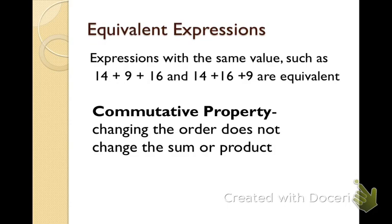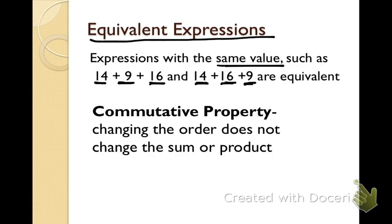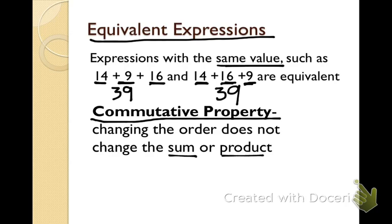We're looking for equivalent expressions — expressions with the same value. We know that 14 plus 9 plus 16 is the same as 14 plus 16 plus 9. That's because 14+9 is 23, plus 16 gives 39; and 14+16 is 30, plus 9 is also 39. The only reason to change the order is to make the math easier, and when we change the order, that's called the commutative property. Changing the order does not change the sum or the product.